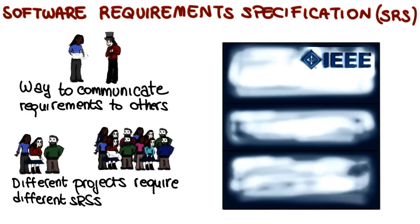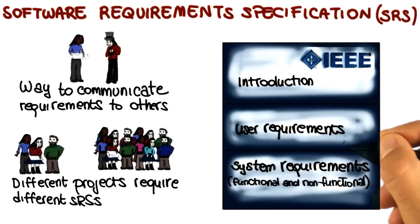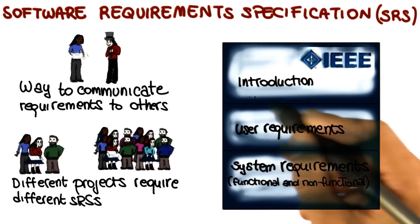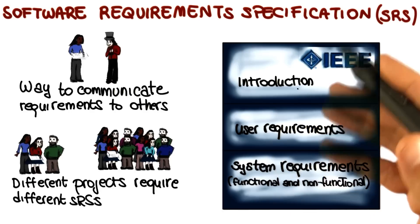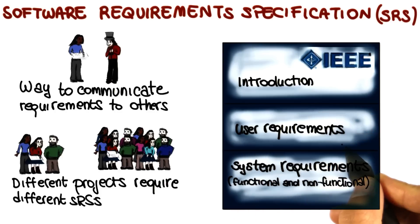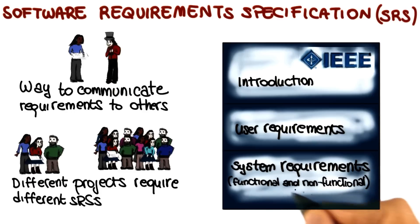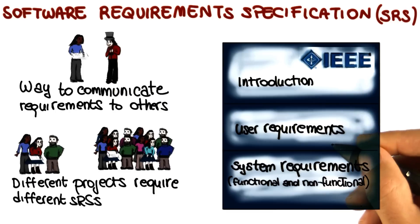In order to have a common format for the SRS document, IEEE defined a standard that divides the document into predefined sections. In the context of this course, we will use a simplified version of the IEEE SRS format that includes three main sections: an introduction, which discusses the purpose, context, and objectives of the project; a user requirements definition, which contains the user requirements; and a system requirements specification, which includes both functional and non-functional requirements. We provide more information about this format when we discuss the projects.